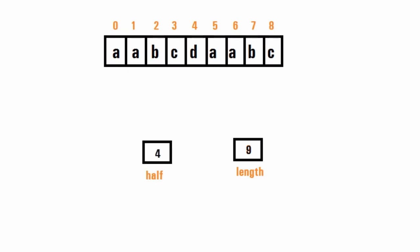Once we find the midpoint, we take a substring before that index and a substring after it. In this case, one substring goes from index zero to three, and the other from index five to eight. These two substrings are equal, so they are our longest prefix and suffix of equal length. We then print the length of that prefix or suffix.